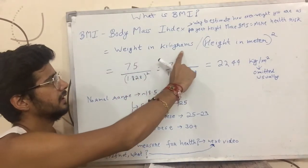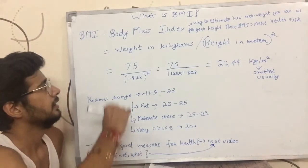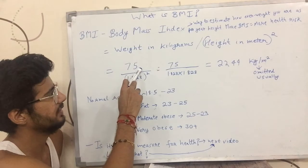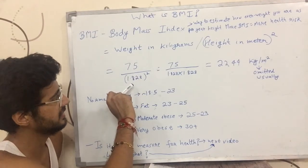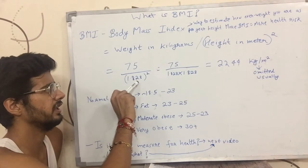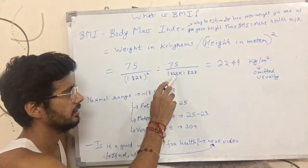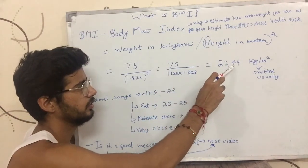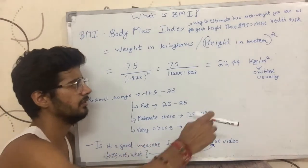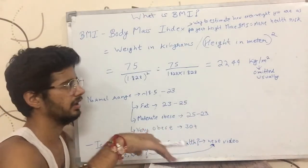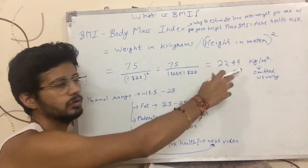The formula for BMI is Weight in Kilograms divided by Height in Meter Square. For example, a person who is 75 kilograms in weight and 6 feet, which is 72 inches or about 1.828 meters. After squaring the height and dividing, the result comes out to 22.44 kilograms per meter square. Usually when you come across BMI anywhere, the unit is omitted, so you would just see 22.44.